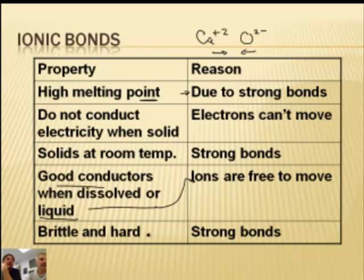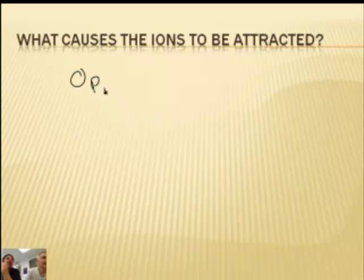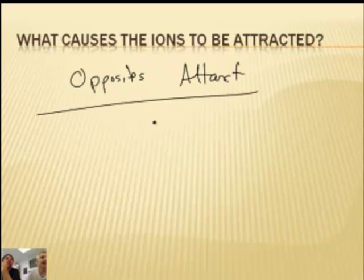Ionic compounds are also brittle and hard. They can shatter very easily, and that's again because of their strong bonds. What causes them to attract? Positive attracts negative — opposites attract. That's the key thing to understand here: oppositely charged ions attract.